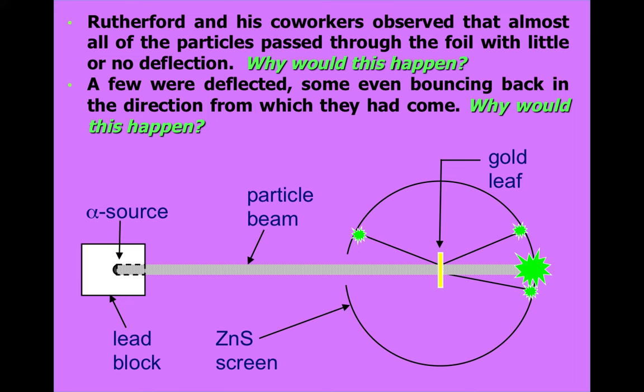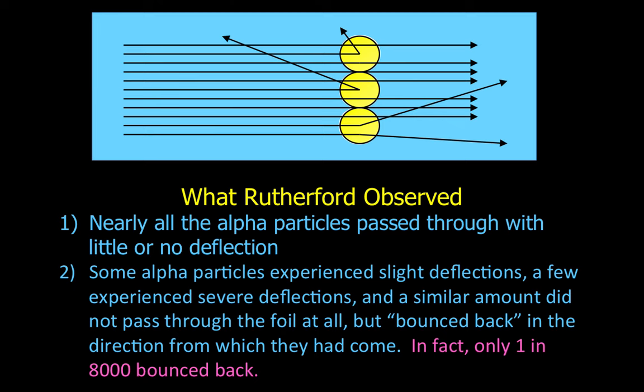What Rutherford observed? He observed that nearly all of the alpha particles passed through with little or no deflection. Some alpha particles, however, experienced slight deflections. A few experienced severe deflections, and a similar amount did not pass through the foil at all, but bounced back in the direction from which they had come. In fact, only one in 8,000 bounced back. This means they must have hit something.